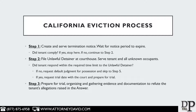But if your tenant contests the eviction case and files, for example, an answer, then the landlord's going to have to go back to court, request a trial date, and prepare for the trial. For step number three, the landlord needs to prepare for the trial, organizing and gathering all the evidence and documentation to refute the tenant's allegations raised in the answer. For example, let's say your eviction is based on non-payment of rent, and the tenant files an answer saying that they didn't pay the rent because the property is not habitable — that's a very common defense. Then you as a landlord are going to want to go through your pictures, your receipts, whatever evidence you have to show that the property has been maintained in a habitable condition.